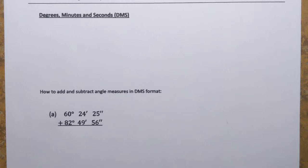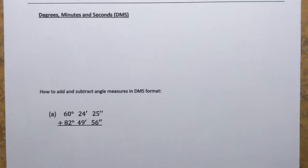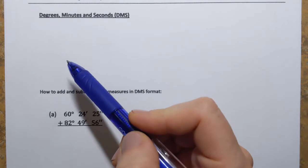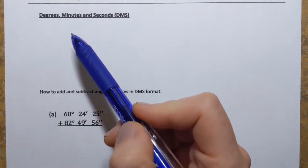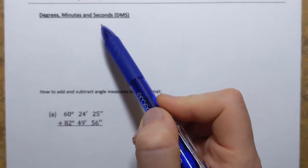Hi everyone! In this video we're going to learn how to operate with angle measures expressed in degrees, minutes, and seconds. We already know that angles can be measured using degrees, but there are also units of angle measure that represent portions of a degree, and they're called minutes and seconds.